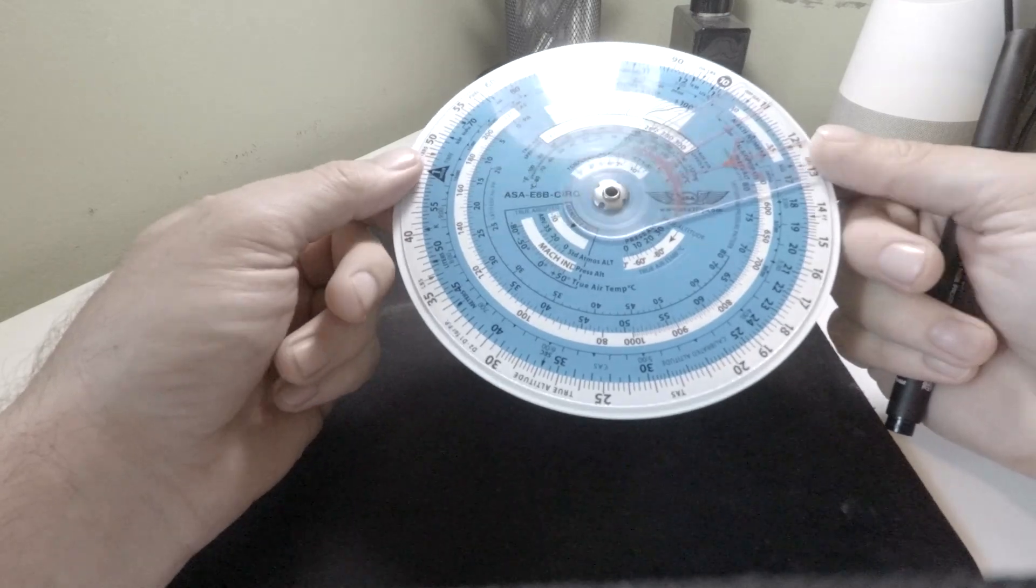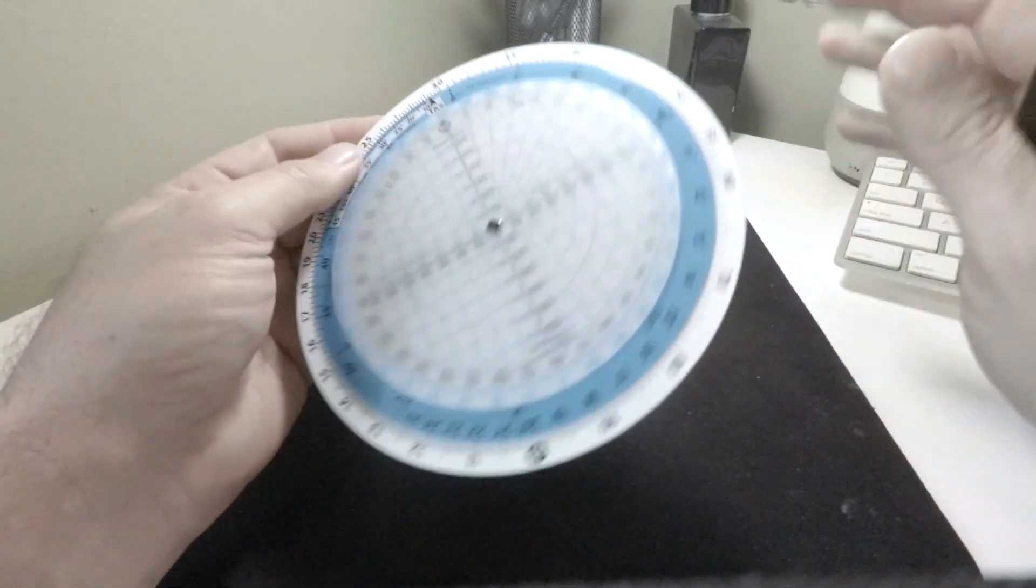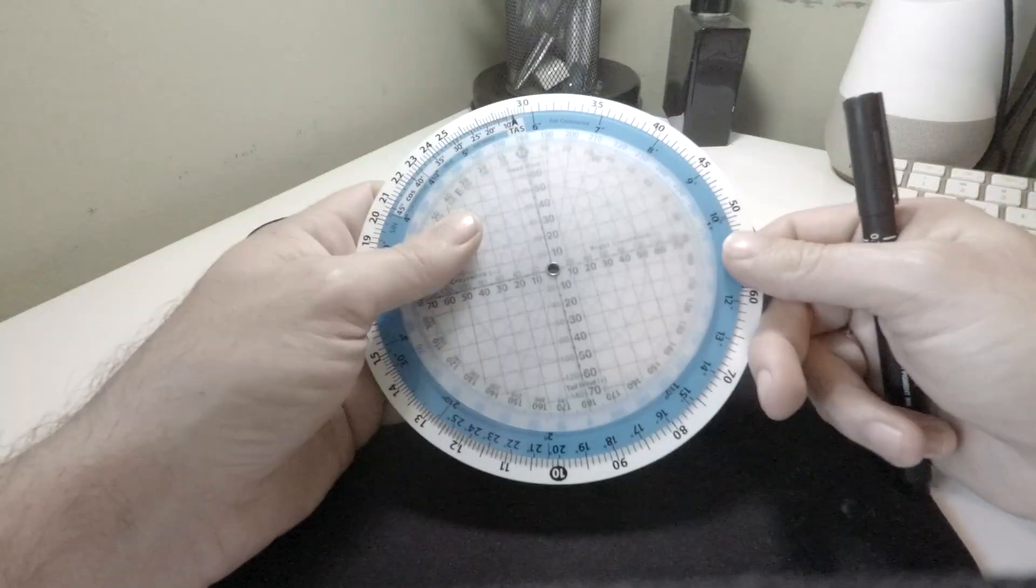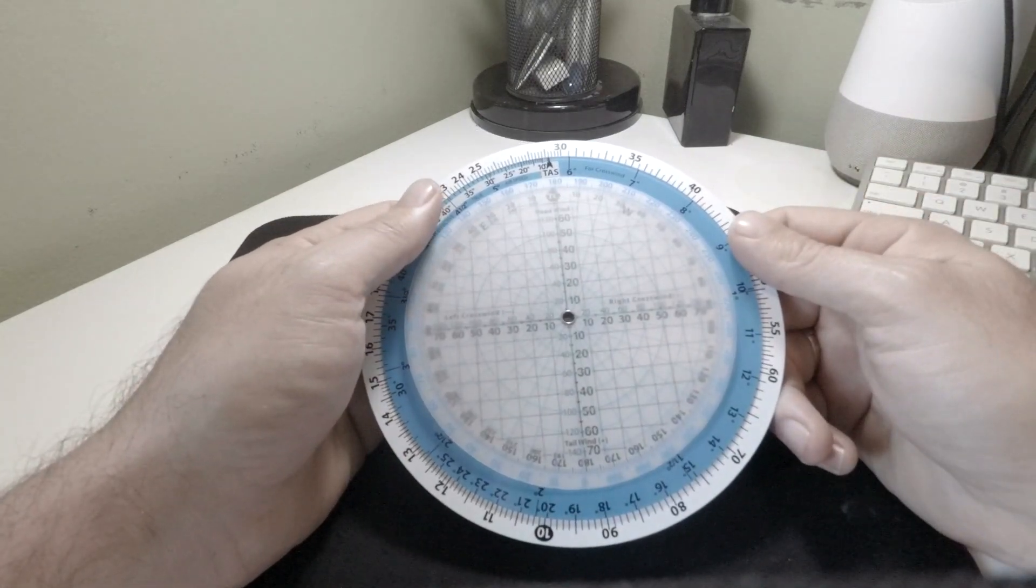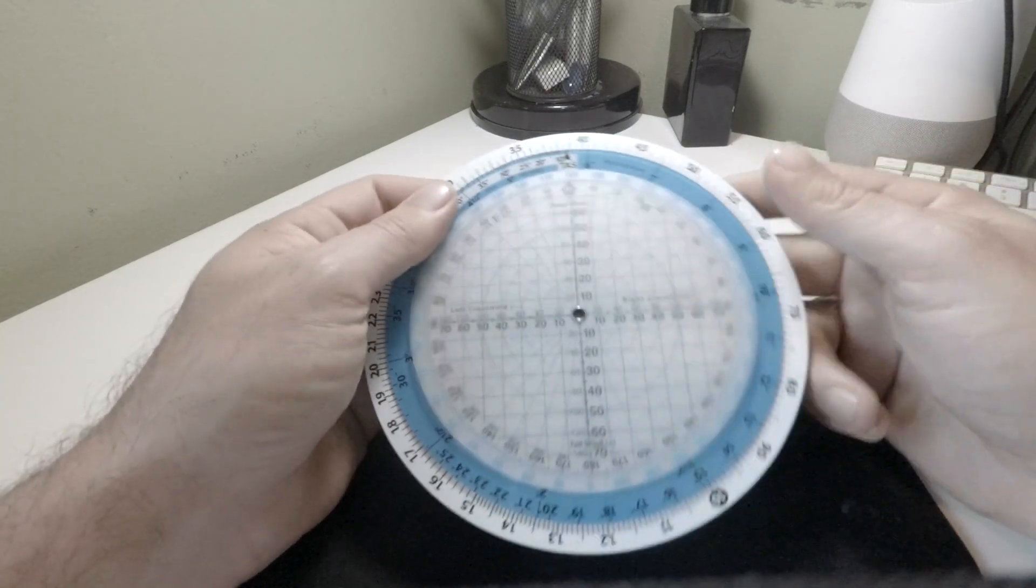If you've got the metal one, it already incorporates ETAS, so you don't need to worry about it. But this one's a little bit different. The first thing you do is take your actual TAS and line up on the outside on the white section.